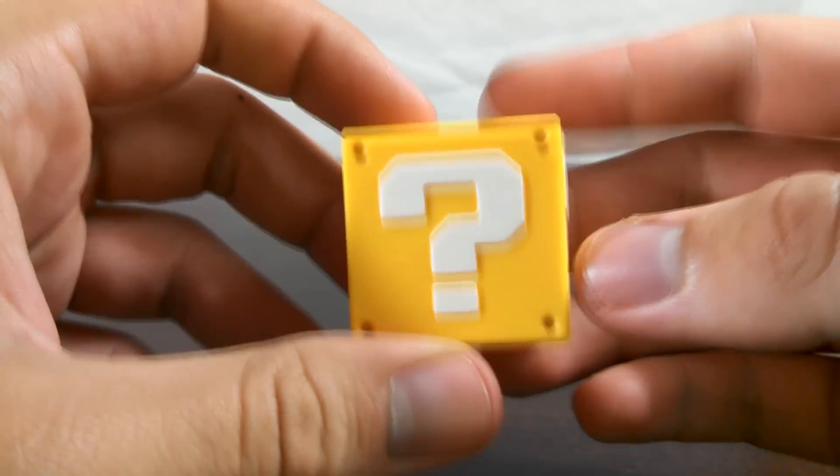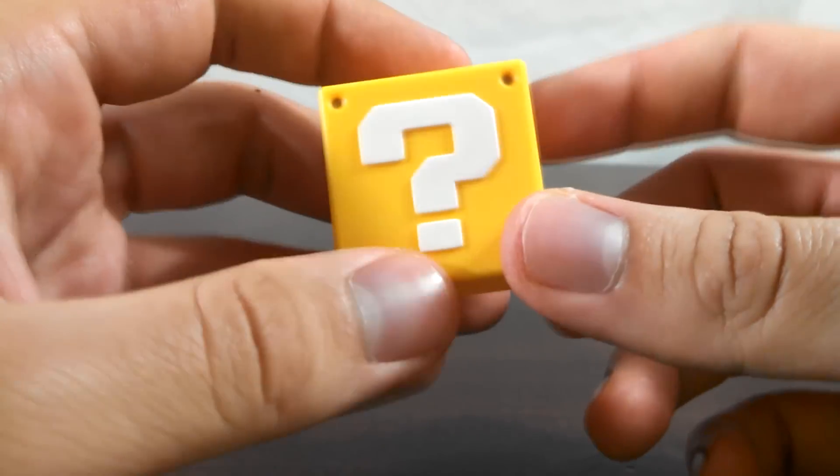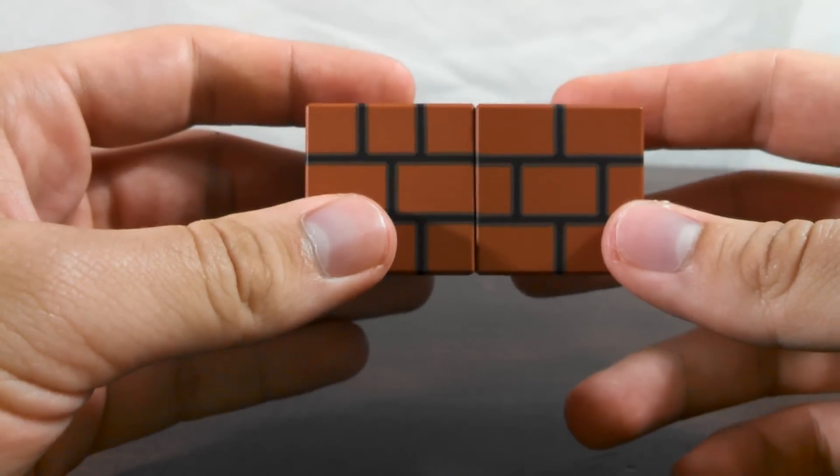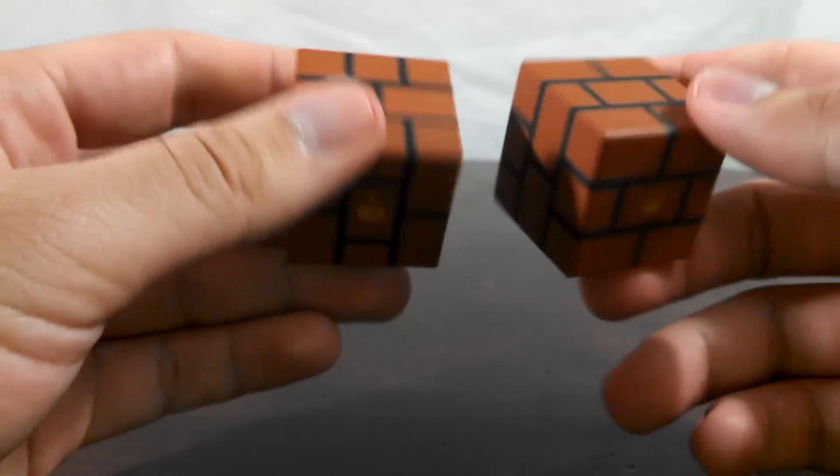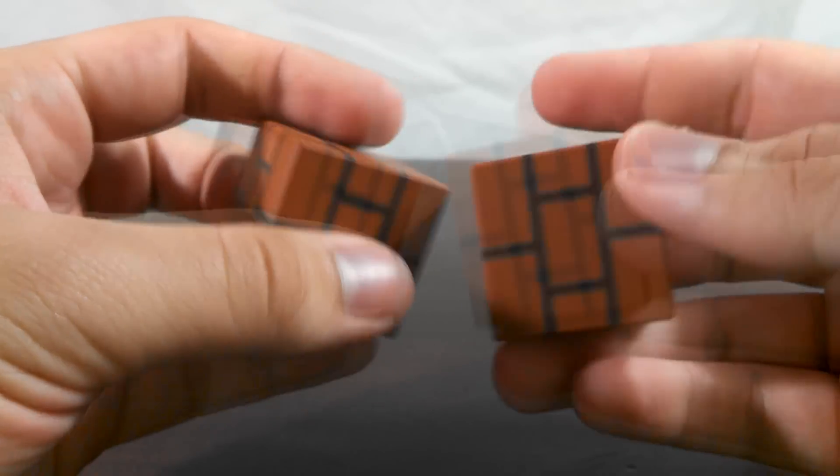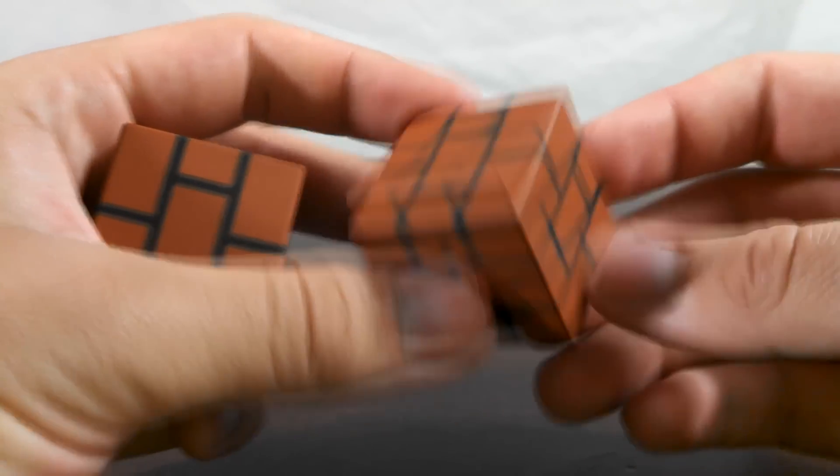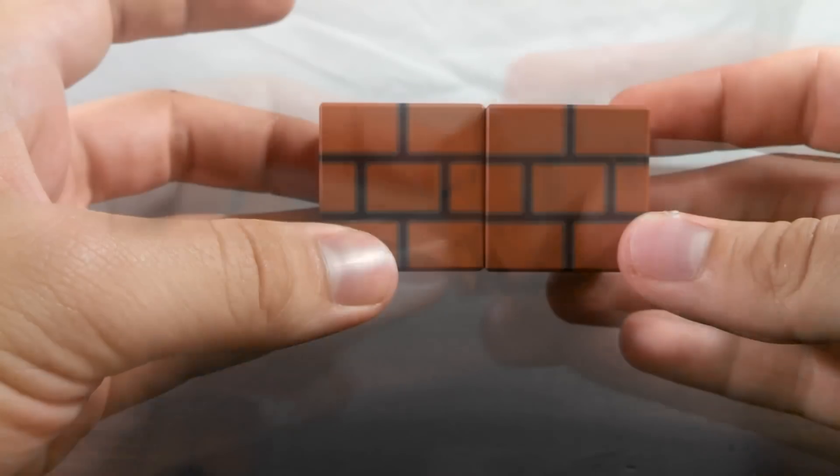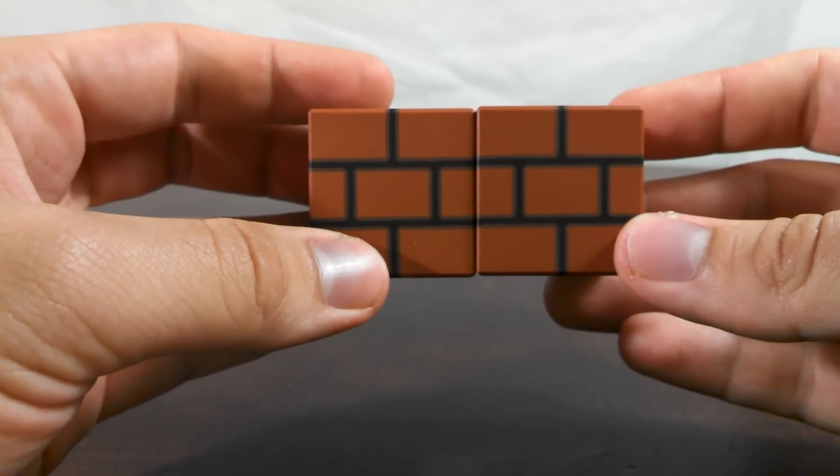Diorama set A also comes with the question mark block that Mario comes with. The set also comes with two brick blocks. Nice detailing on them, but it's all paint or decal of some kind. And all three blocks that you get in the set can be used together.